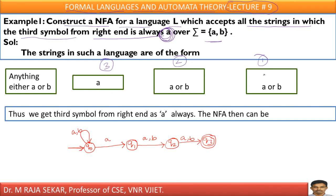In the first position there is no restriction — I can keep A or B. In the second position also there is no restriction — I can keep A or B. So from state Q0, on A I will go to Q1. After Q1, I can keep A or B, so I am writing A comma B. After that also I can keep A or B, so I am writing A comma B. After that I must reach the final state. I need not bother about what happens before this A, that's why I am keeping a self-loop. This is the corresponding NFA.